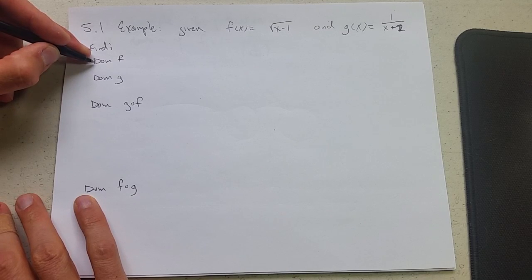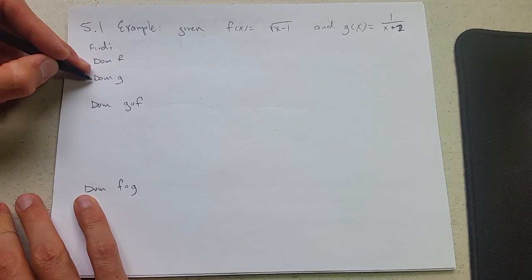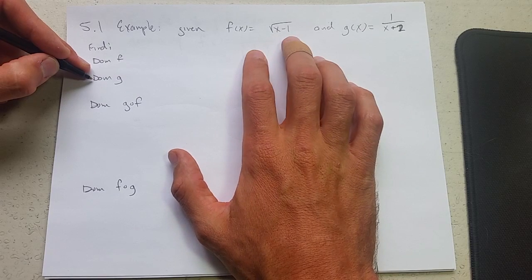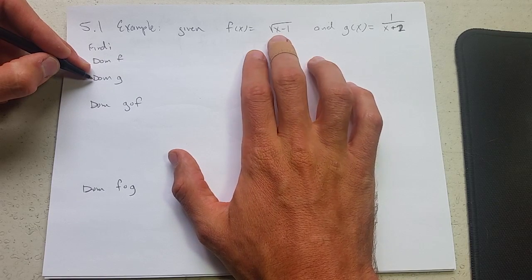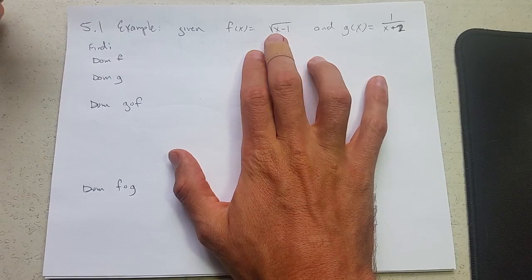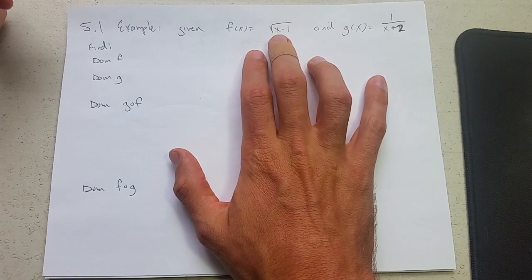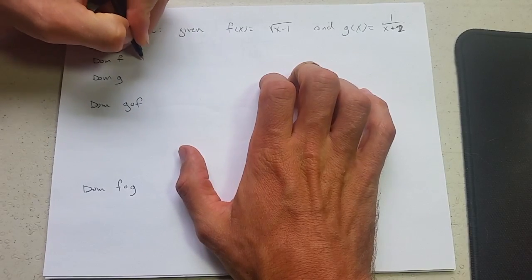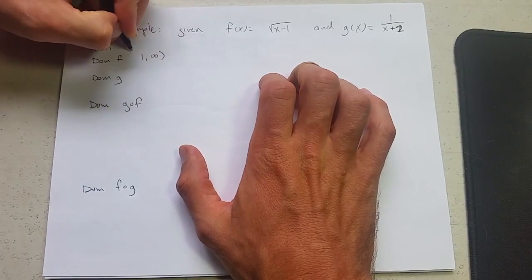So let's start out with the easy parts. We've done domains of functions that look like this before. What's the domain of f? Make sure this is not negative. If x is 1 this will be 0 and if it's greater than 1 this will be positive. So the domain of f is going to be 1 to infinity.